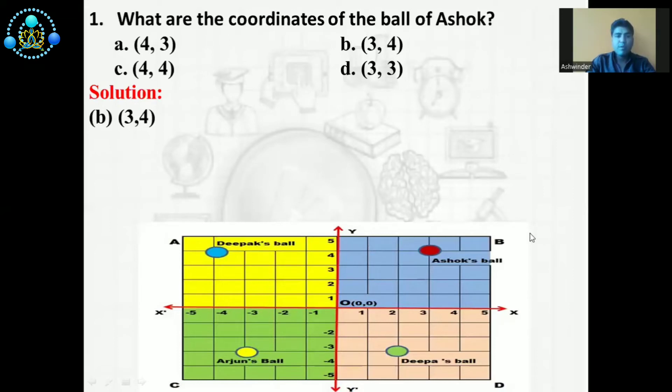There are four options. A: 4 and 3. B: 3 and 4. C: 4 and 4. D: 3 and 3. So the correct option is B, 3 and 4.